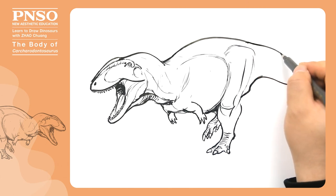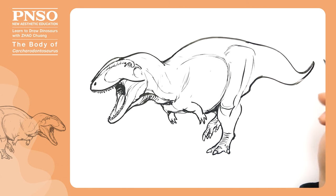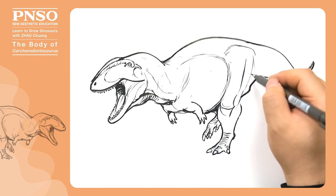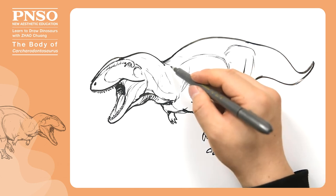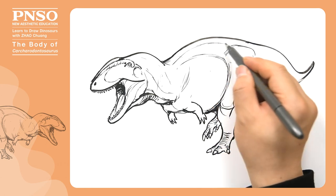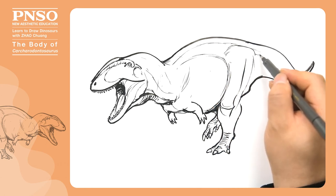Because of the perspective, the tail we can see in the angle would look shorter than viewed from the side. Now, let's draw the muscles on both sides of its back and its tail.